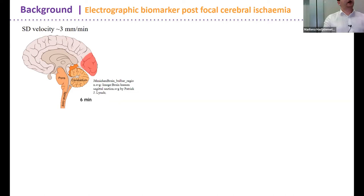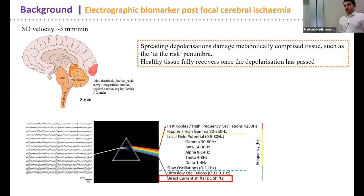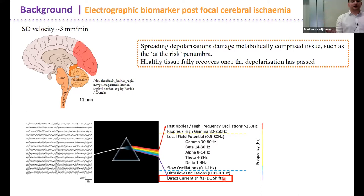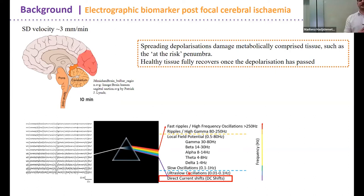Spreading depolarizations have a velocity of around three millimeters per minute as they propagate across the cortex. We record brain signals in electrophysiology; these oscillations can be broken down into what most people record as the local field potential. However, spreading depolarizations occur at what we call direct current shifts — these are very, very slow, not even oscillations. Importantly, these spreading depolarizations only damage metabolically compromised tissue such as the penumbra, which is why we're so keen on them.